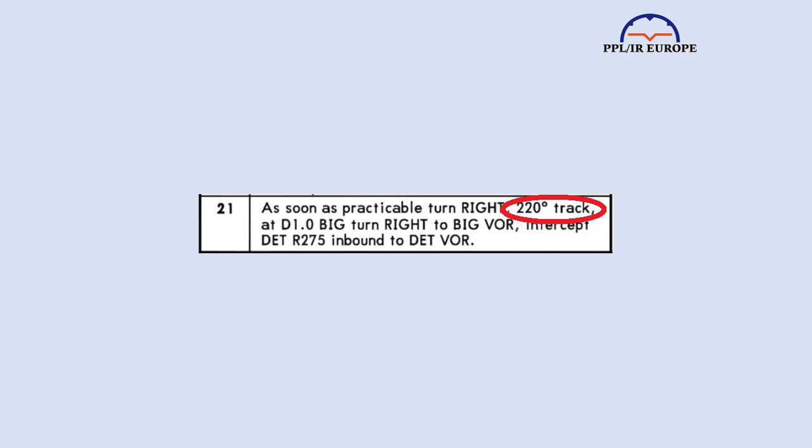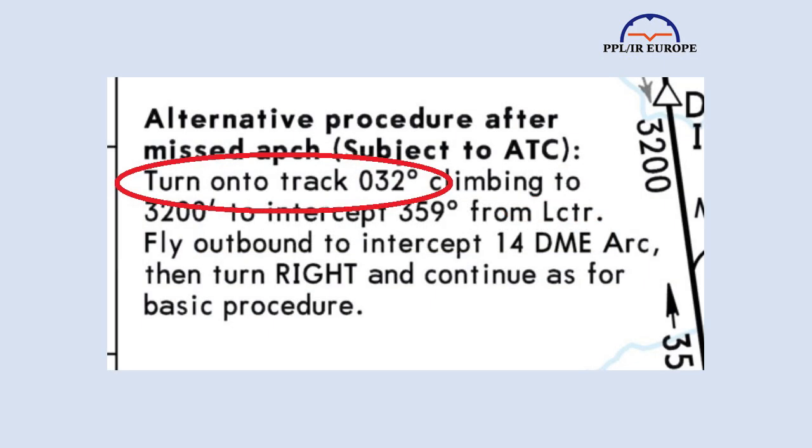The second great use for the track pointer is where you need to follow a track in a procedure. For example, in the departure VFR and IFR from runway 21 at Biggin Hill, or this alternate missed approach at LID, the instruction is to follow a track without guidance – and the track pointer makes that trivial. You just turn on to the desired track and need think no more.